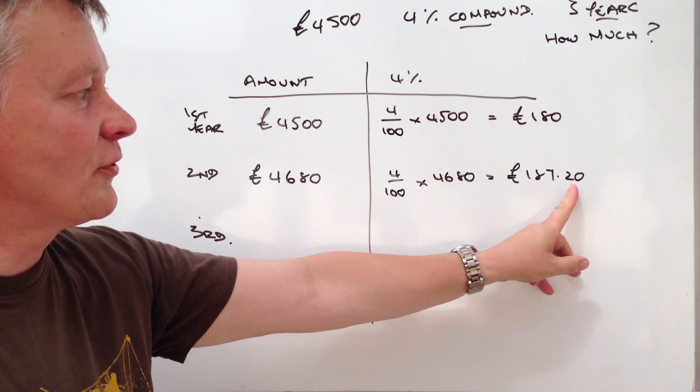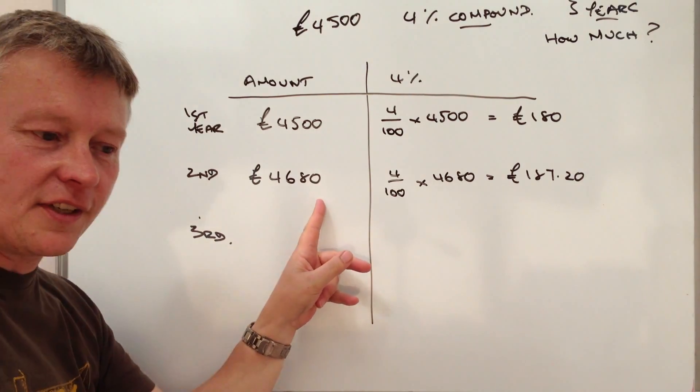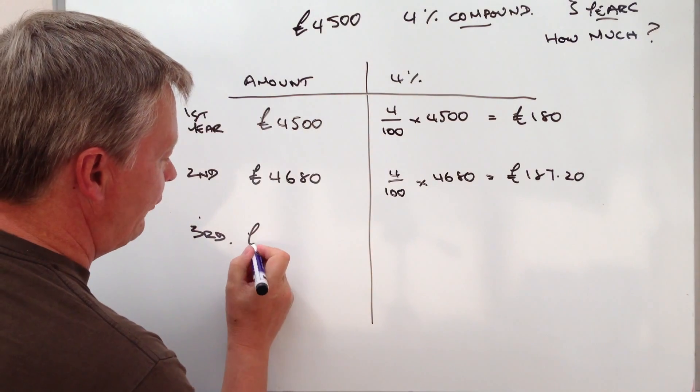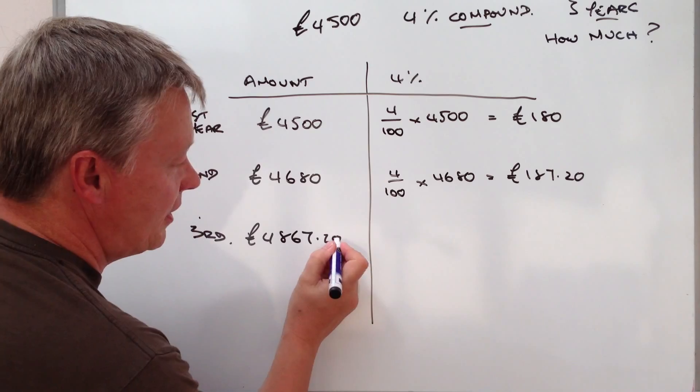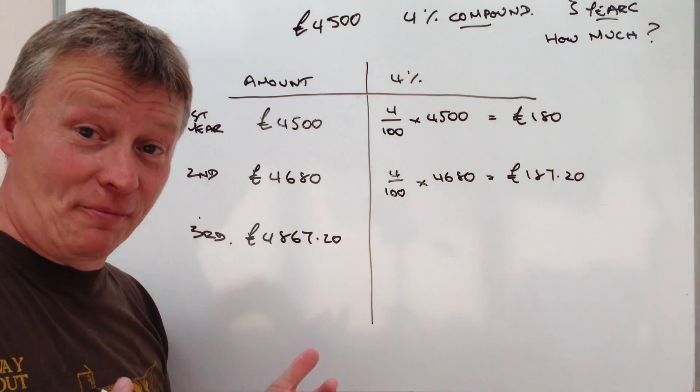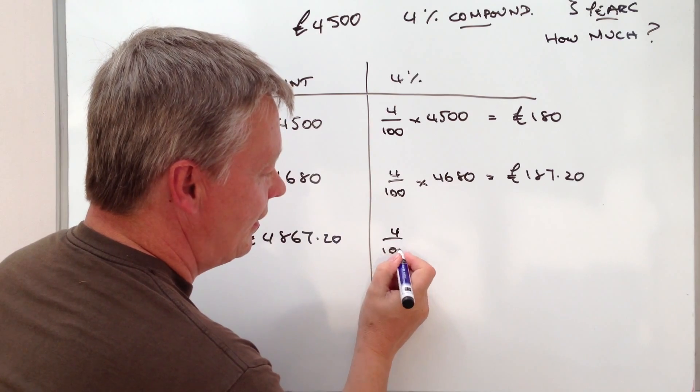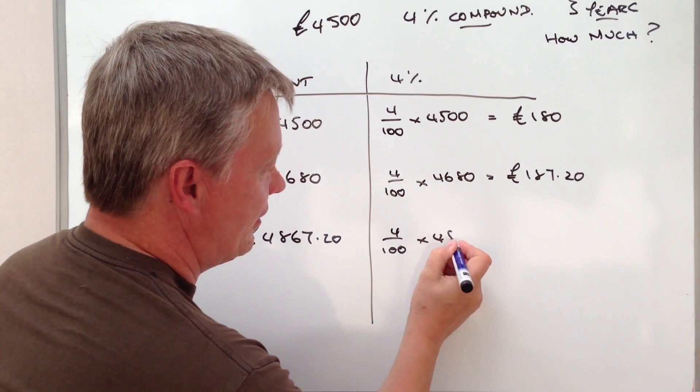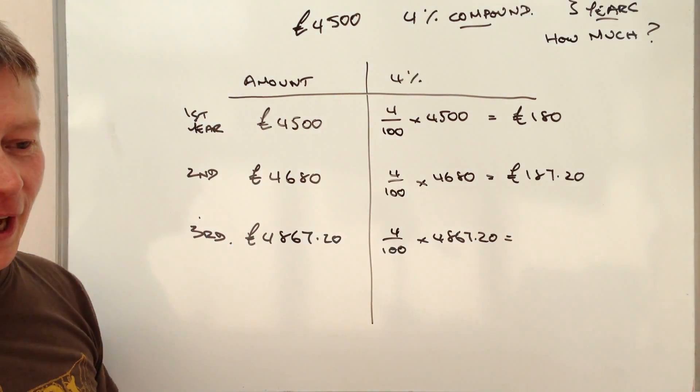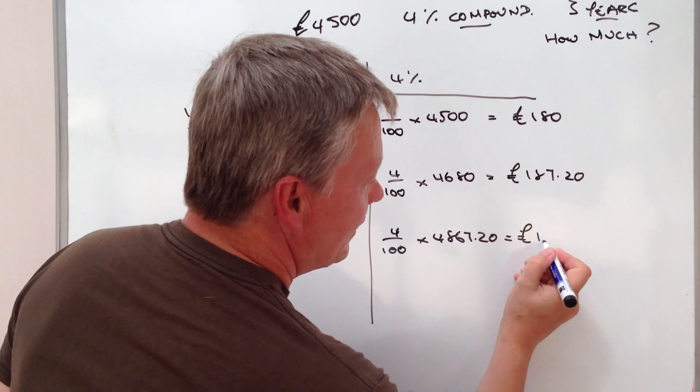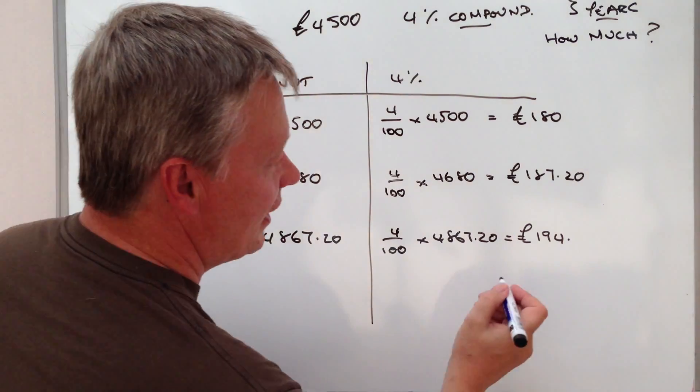So this time I'm going to add that £187.20 onto my £4,680 and I'm going to have £4,867.20 and this time I'm going to earn 4% of this capital. So it's 4% of £4,867.20. I'm going to have to refer to my notes and that's going to give me £194.69.